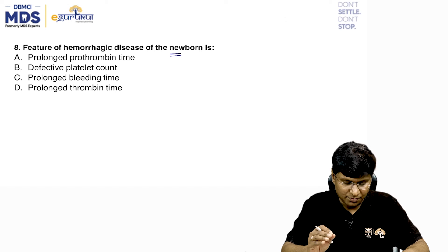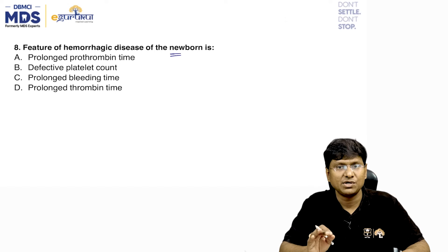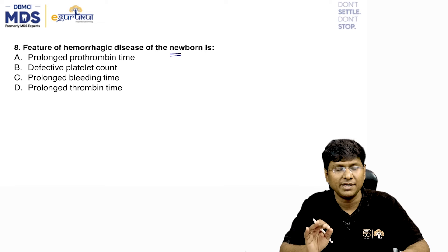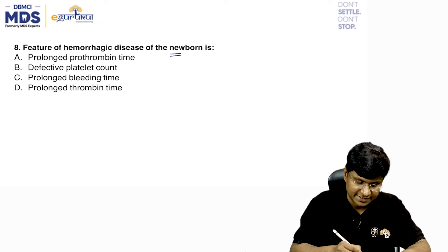Next question: the feature of hemorrhagic disease of the newborn is — prolonged prothrombin time, defective platelet count, prolonged bleeding time, or prolonged thrombin time? The feature of hemorrhagic disease of the newborn is prolonged prothrombin time.